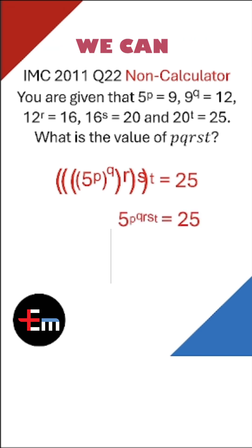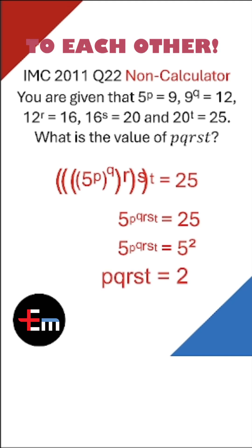Using the exponent rule, we can merge these letters together. So 5 to the pqrst equals 25. And we know that 5 squared is 25. We have the same base as 5, so the exponents must equal each other. So pqrst equals 2. Easy!